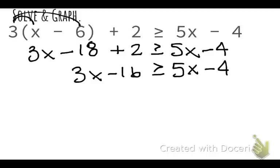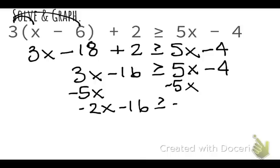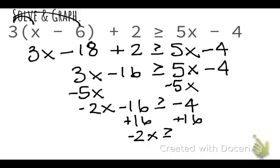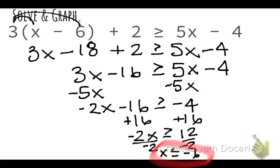To combine the x values, I'll subtract 5x from both sides to get negative 2x minus 16 is greater than or equal to negative 4. Then I'll add 16 to both sides to get negative 2x is greater than or equal to 12. Dividing both sides by negative 2 — because I'm dividing by a negative — I need to flip the inequality symbol, giving x is less than or equal to negative 6.